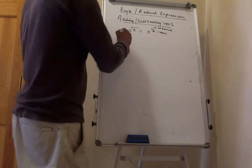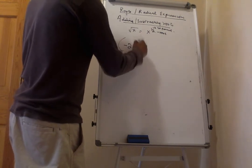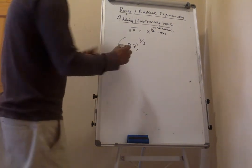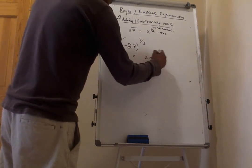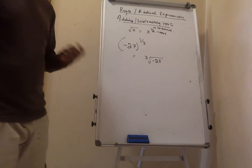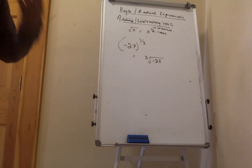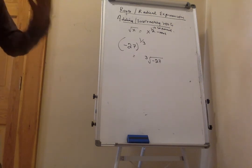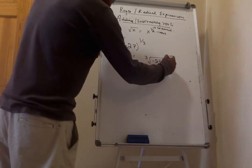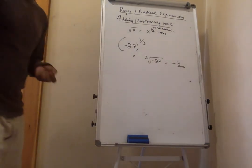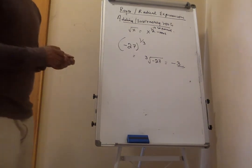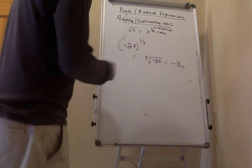Now: negative 27 to the power of 1 over 3 is the cube root of negative 27. This does have an answer because odd roots can produce negative numbers — a number multiplied by itself three times can give a negative outcome. The cube root of negative 27 is negative 3, because negative 3 times negative 3 is positive 9, and positive 9 times negative 3 is negative 27.